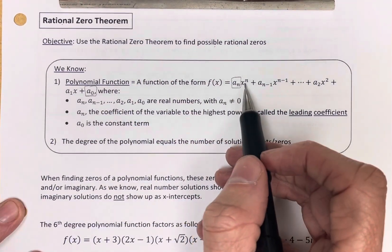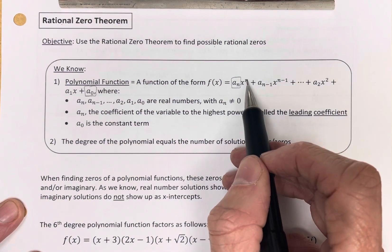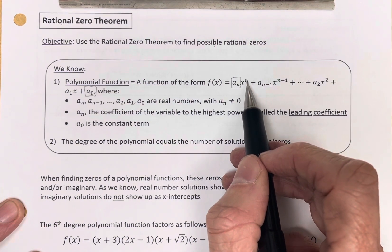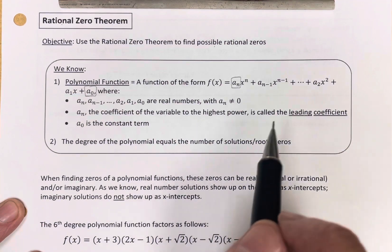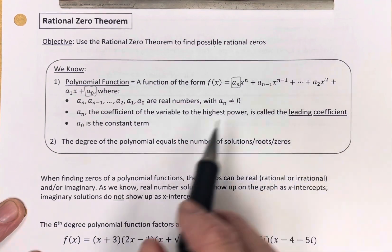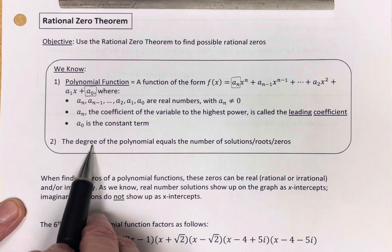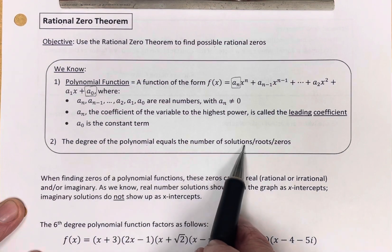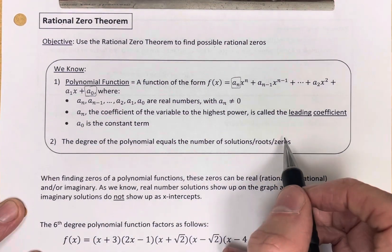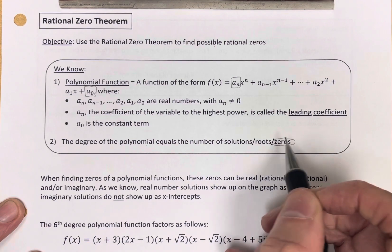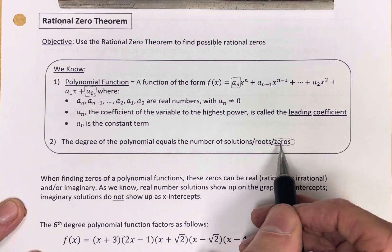A polynomial with the powers going from greatest to least is written in standard form. We also know that the degree of the polynomial is equal to the number of zeros. We've been focused more on calling them zeros, but they're also called solutions or roots.